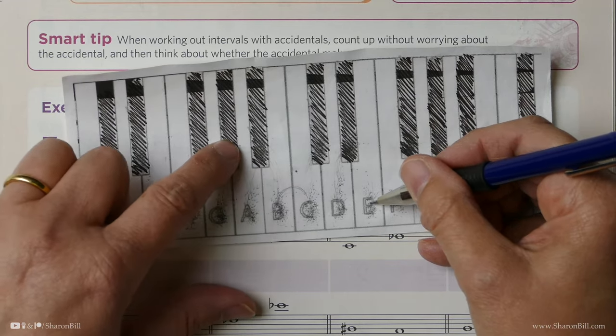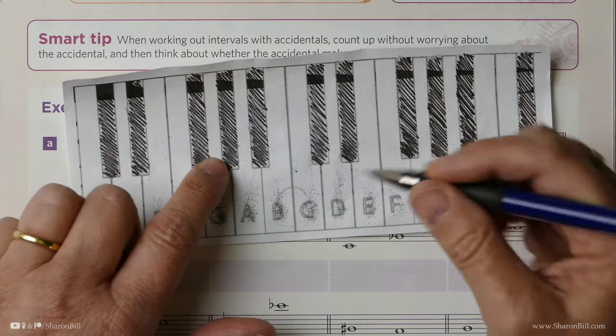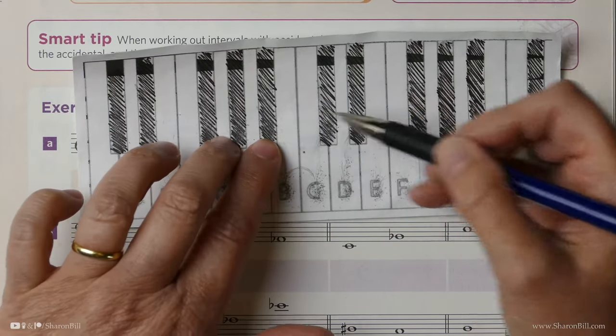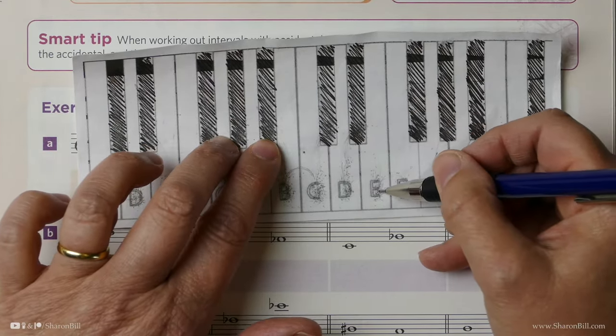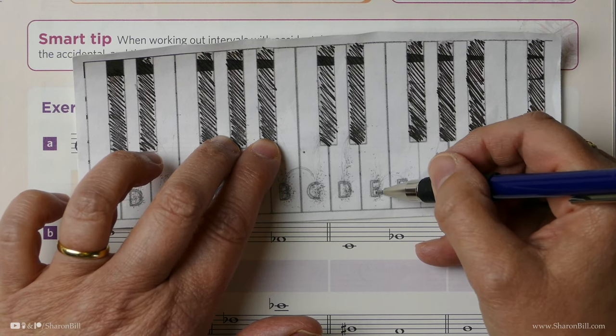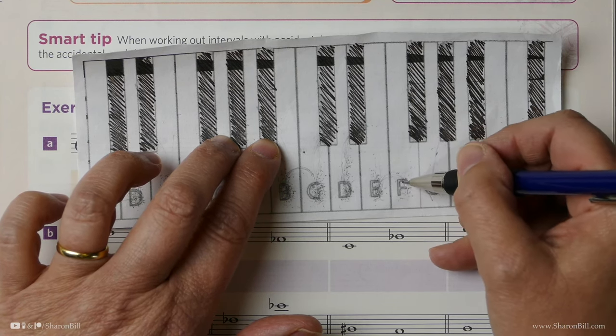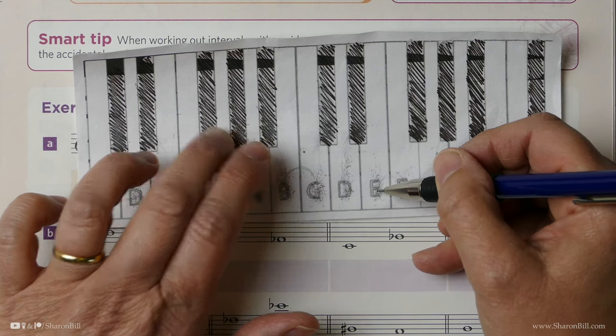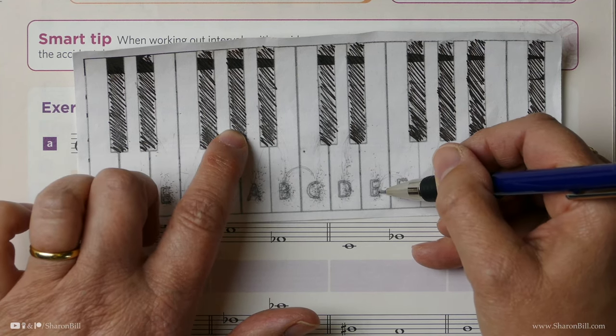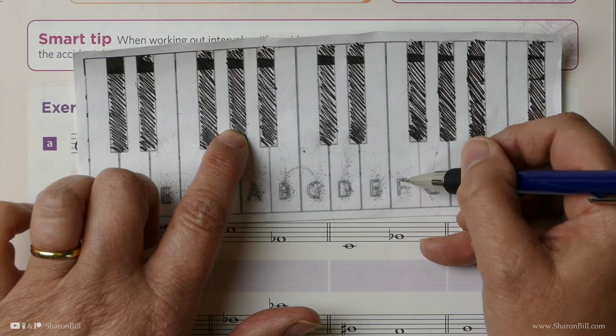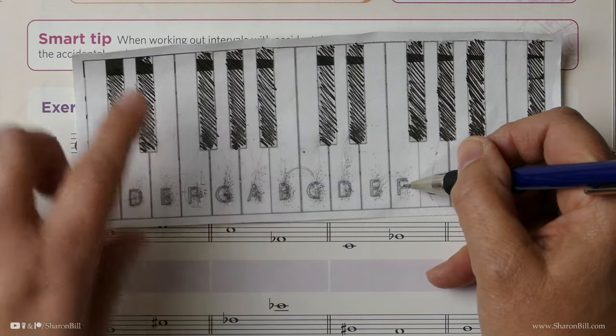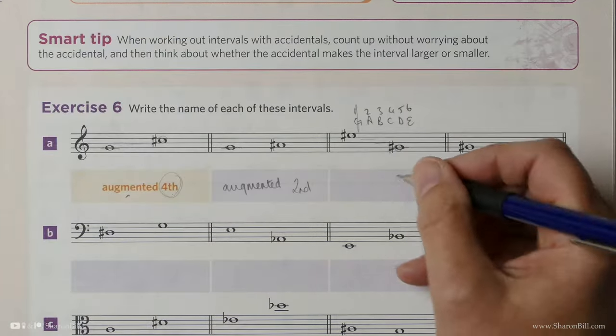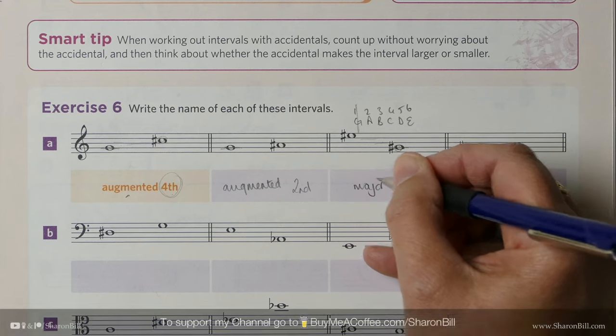G to E is major. G sharp to E is major. However, we know that in G sharp minor, E is part of the minor scale, but then it could be raised in the melodic minor version, making that major interval. So G sharp to E natural is part of the minor scale, and then it's raised in the melodic minor version. So either way, we now know it's a major sixth.